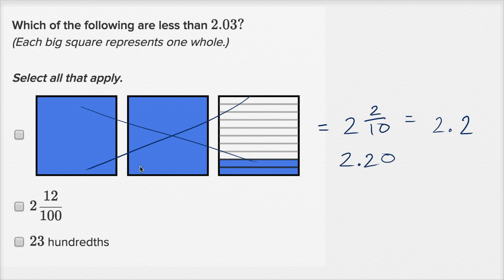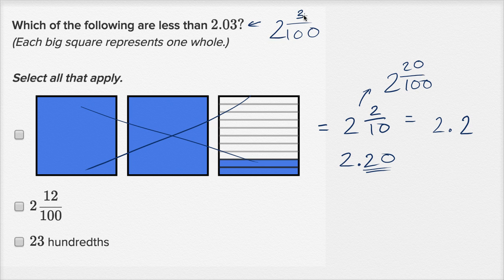Another way to think about this: 2 and 2 tenths is the same thing as 2 and 20 hundredths. The number you're comparing against is 2 and 3 hundredths, and 20 hundredths is greater than 3 hundredths, so this is not less than 2.03. Here we have 2 and 12 hundredths, and the original number is represented as 2 and 3 hundredths. The whole number part — the 2 — is the same. Looking at the fraction part, 12 hundredths is greater than 3 hundredths, so this one also is not less than 2.03.